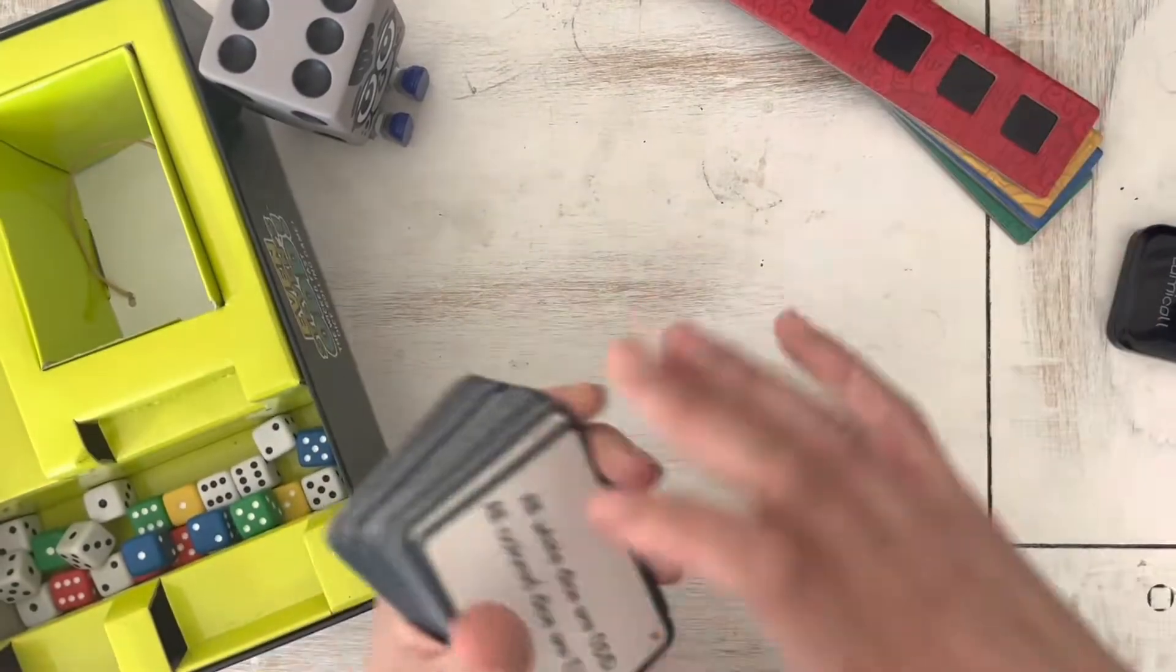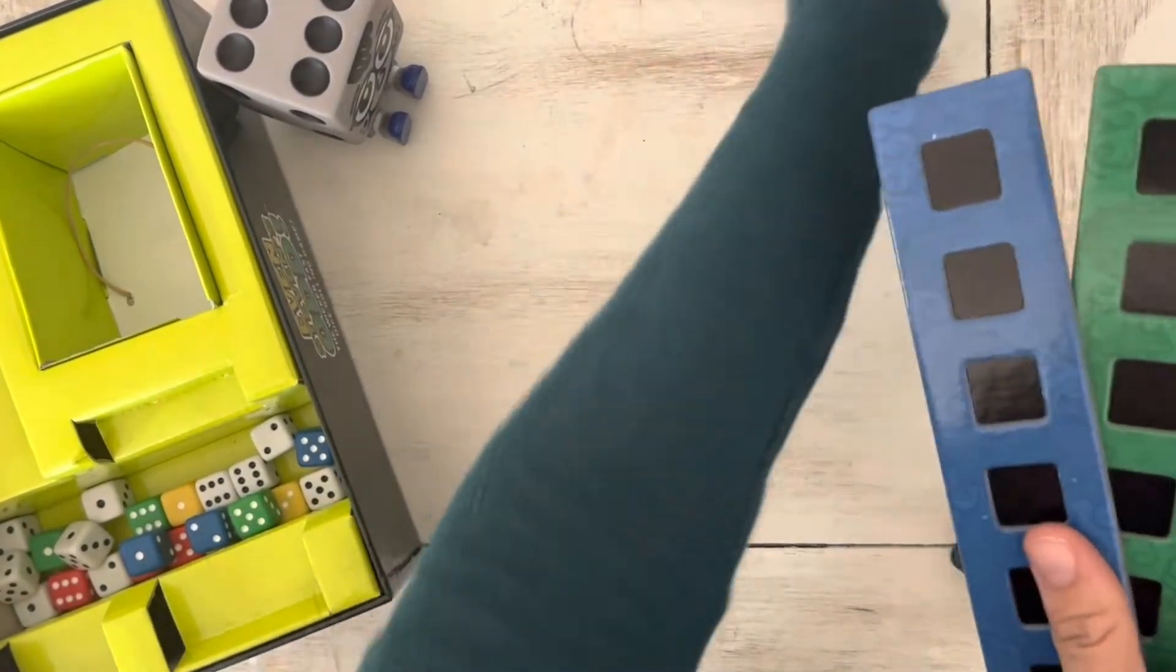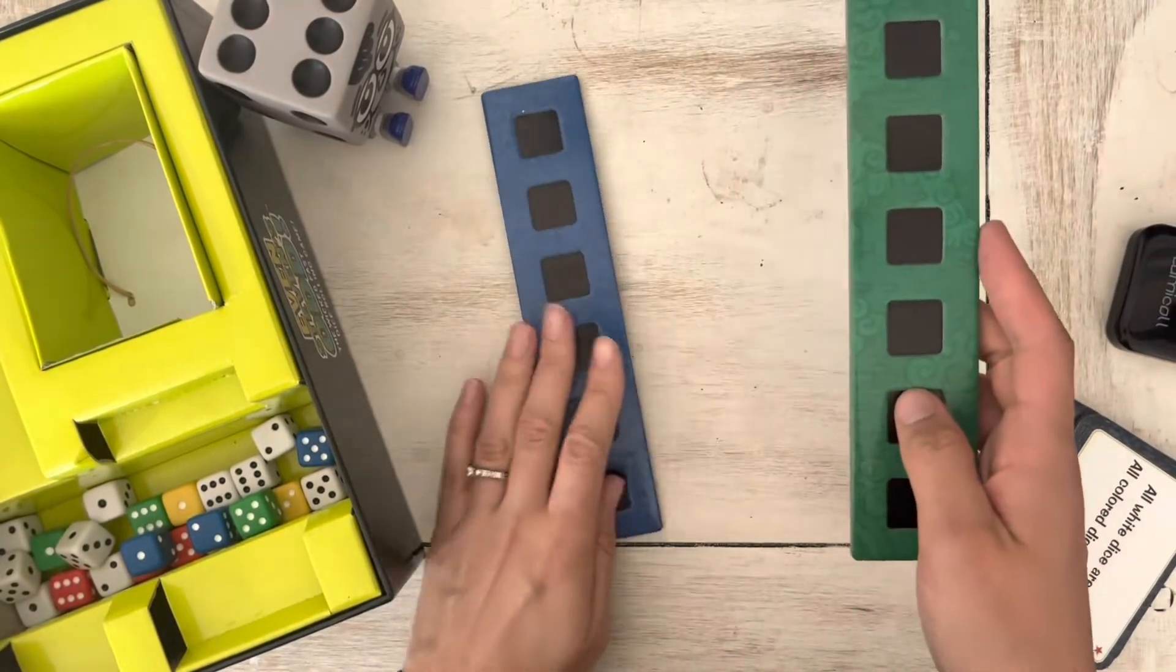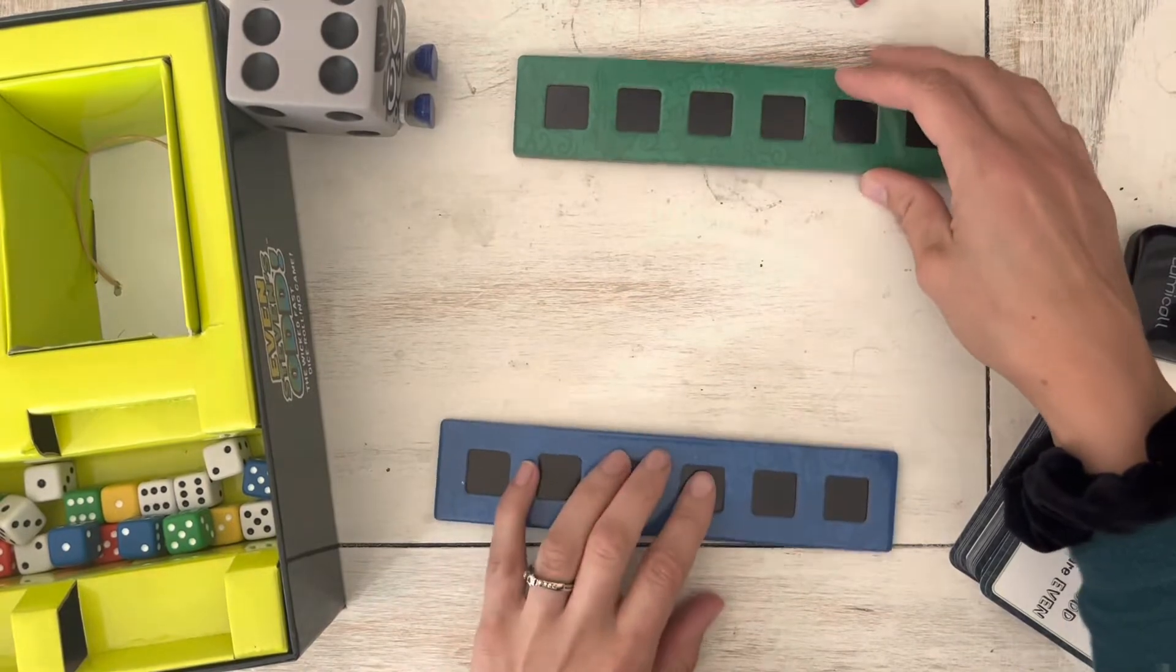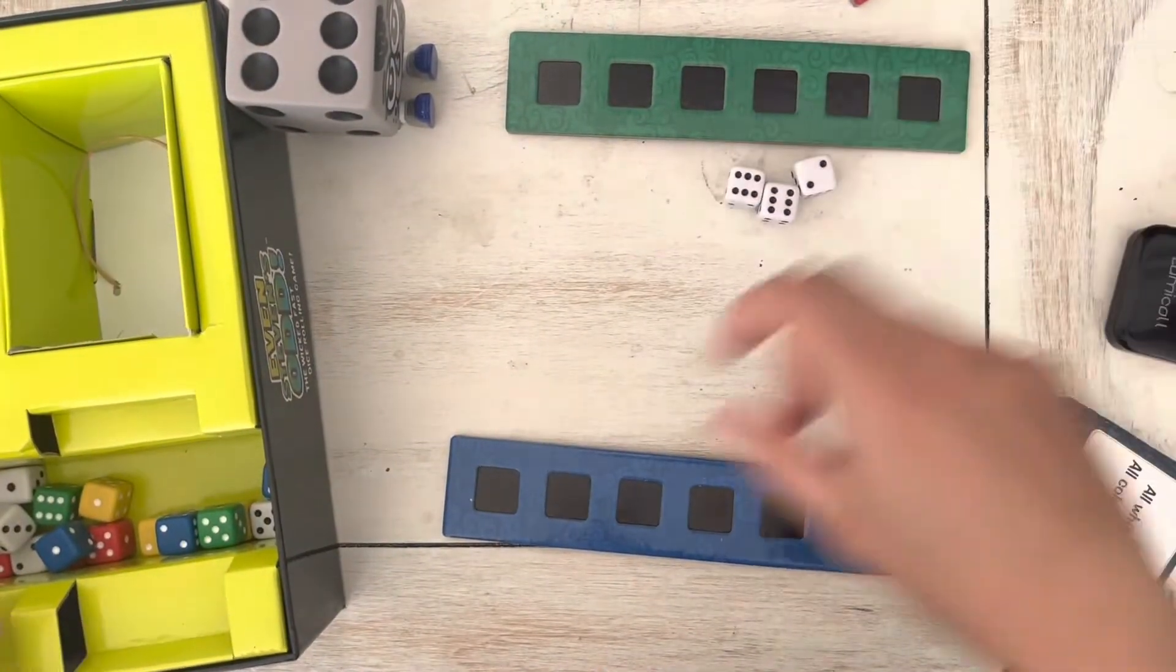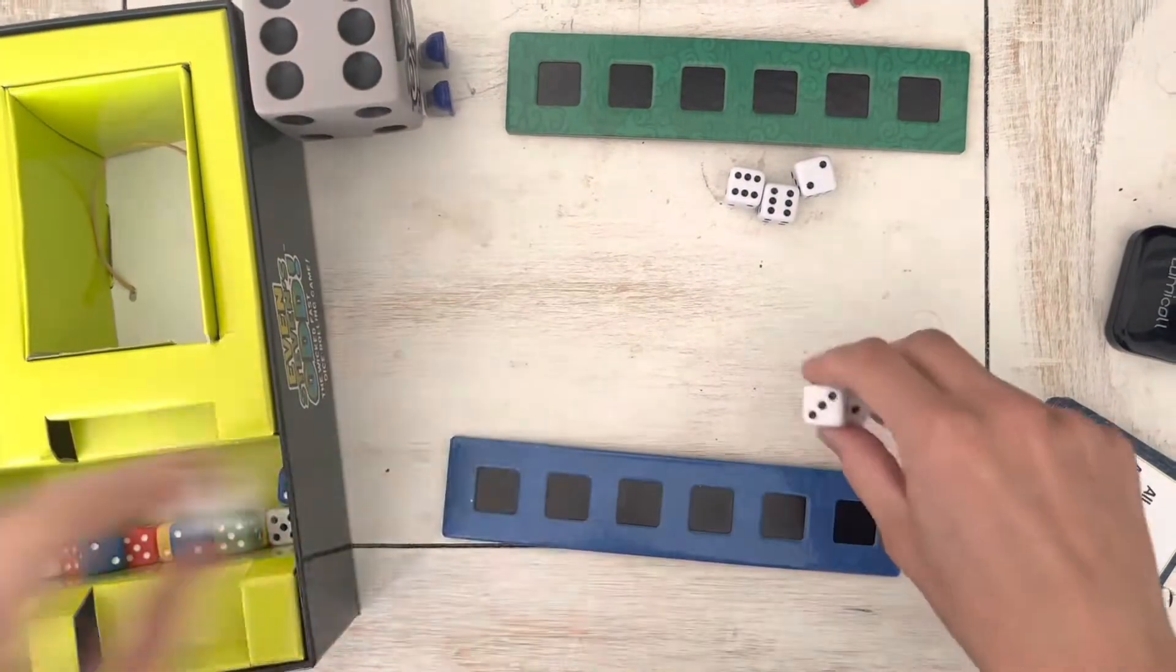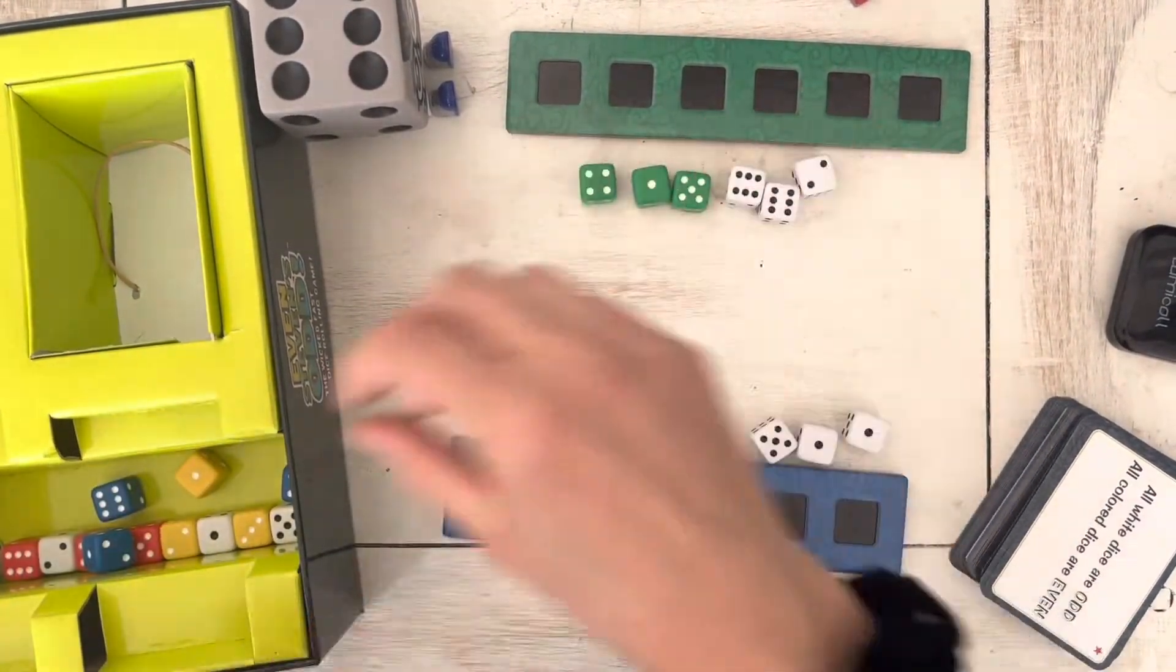To show you how this game is played, I will pretend like there's two players. So blue, I'll be blue, the opponent will be green, and everybody is going to get three white dice.